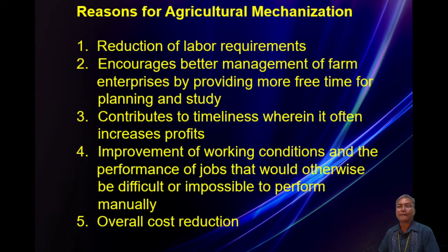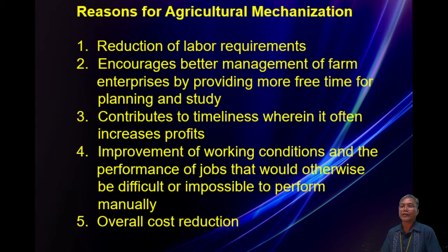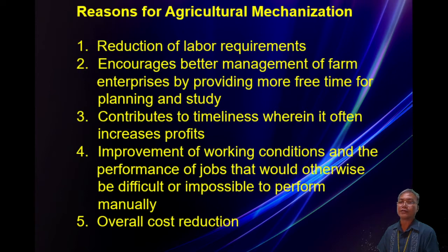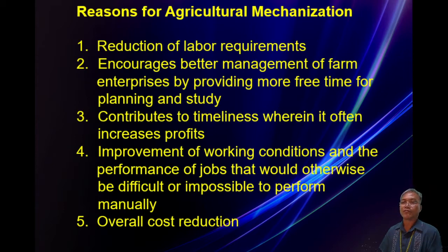Number four is improvement of working conditions and the performance of jobs that would otherwise be difficult or impossible to perform manually. For example, in your farm there may be many big stones and boulders, and you cannot have enough energy to remove them. It only requires machines — mechanization — so the job is very difficult to do without machinery.